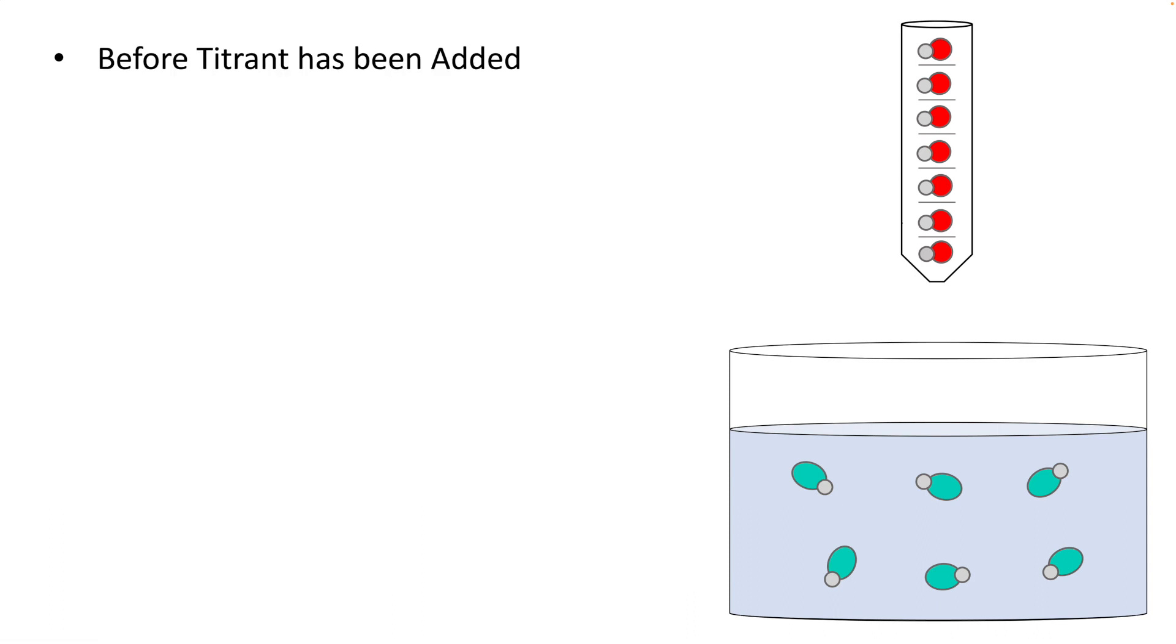Before you start the titration, before any titrant has been added, you simply have a weak acid in equilibrium. This is a thing that's been done before. The weak acid doesn't dissociate much, but it does a little bit. And again, we're generally not showing the small amount of dissociated species.